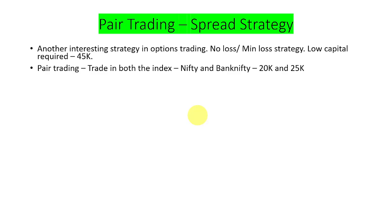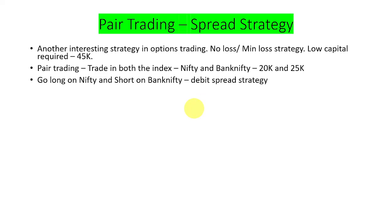We do pair trading because generally both indexes — Nifty and Bank Nifty — usually travel in the same direction: either both will be bullish or both will be bearish. There will only be a very rare scenario where one is bullish and one is bearish. That is why we trade in both indexes. In this strategy we go long on one side and short on the other side.